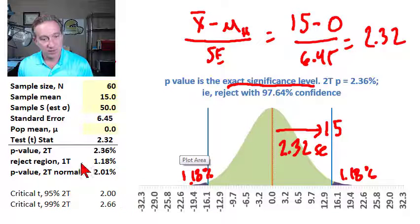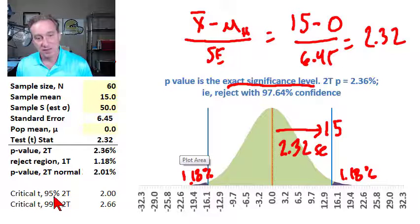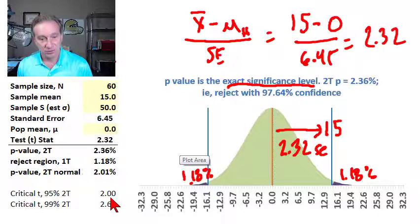And so if we look at some critical values here, the critical t-value at 95% is 2. So that's the critical t with these number of degrees of freedom.